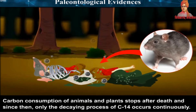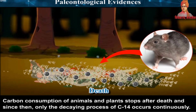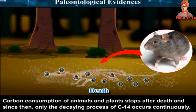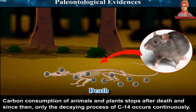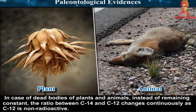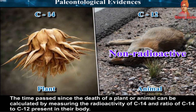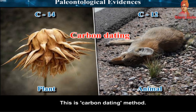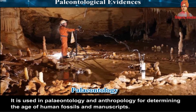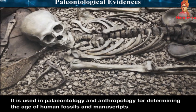Carbon consumption of animals and plants stops after death, and since then only the decaying process of C14 occurs continuously. In case of dead bodies of plants and animals, the ratio between C14 and C12 changes continuously as C12 is non-radioactive. The time passed since the death of a plant or animal can be calculated by measuring the radioactivity of C14 and the ratio of C14 to C12 present in their body. This is the carbon dating method, used in paleontology and anthropology for determining the age of human fossils and manuscripts.